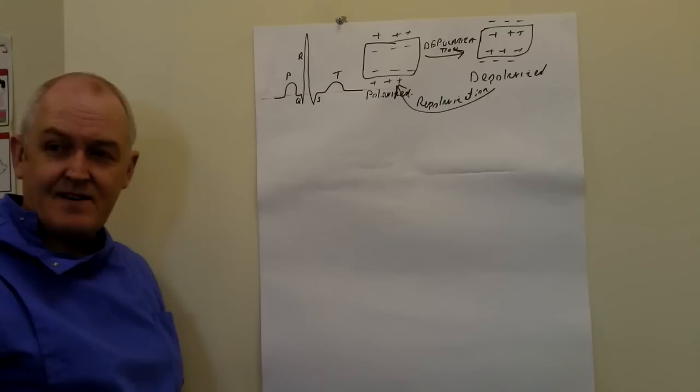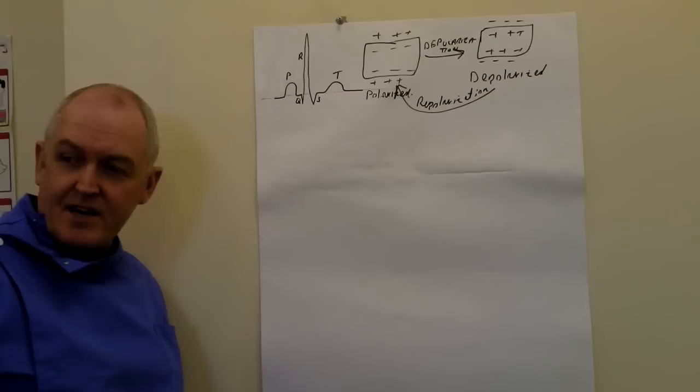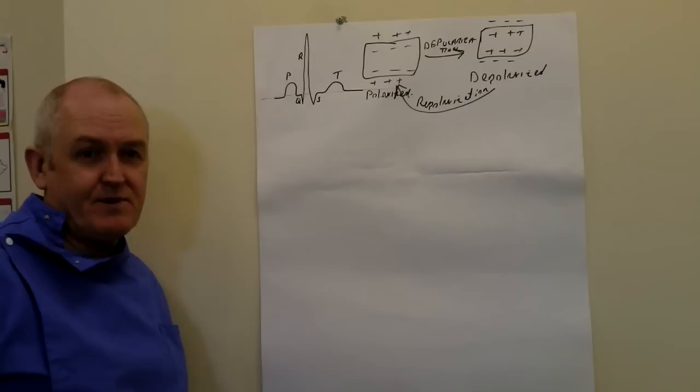To have a proper sinus rhythm, the rate must be between 60 and 100 beats per minute. So physiologically, a sinus rhythm is described as a P, QRS, T in the right order, fairly regular, with a rate between 60 and 100 beats per minute.